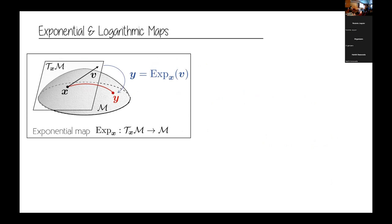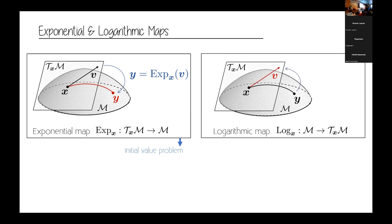This also allows us to define mappings between tangent spaces and the manifold. Given an initial position x and initial velocity v in the tangent space at x, the exponential map maps this velocity to a point on the manifold — you shoot a geodesic with initial position x and velocity v and see where it arrives after time one, giving point y. This is equivalent to solving the geodesic equation as an initial value problem. The inverse mapping is called the logarithmic map: given a point y on the manifold, you find which initial velocity to apply at x to arrive at y after time one — this is a boundary value problem. You use the logarithmic map to move points from the manifold to the tangent space, do your calculus there, then move back with the exponential map.